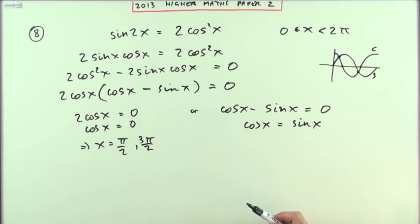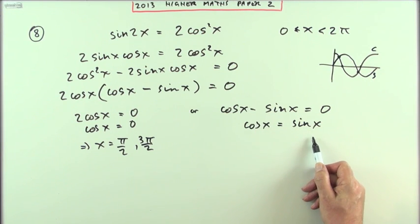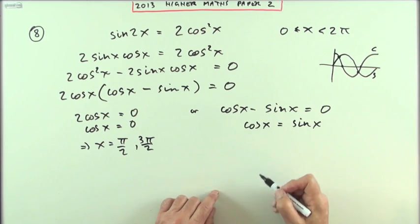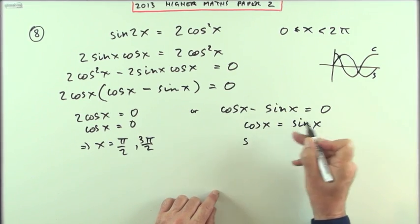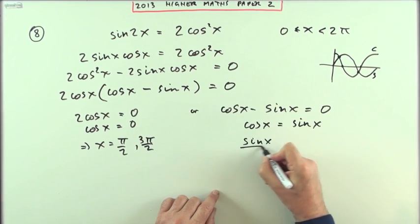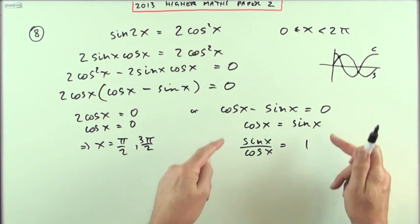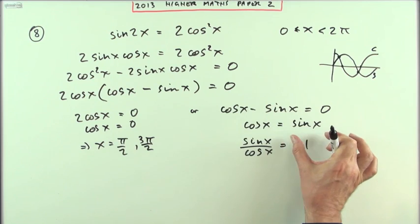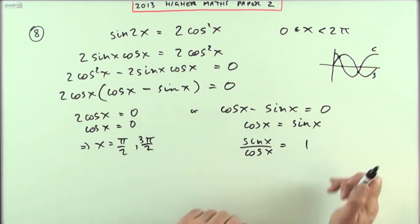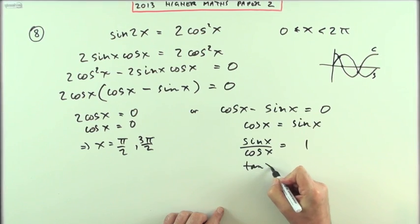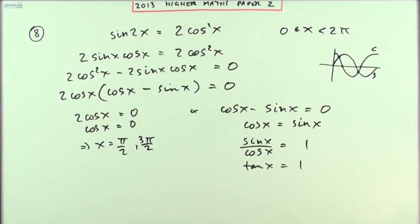Take the cos x across and divide. Dividing both sides by cos x would give me sin x over cos x equals 1. Take the cos x across and dividing, and that will leave just a 1 here. Which means what I'm going to solve instead is tan x equals 1.